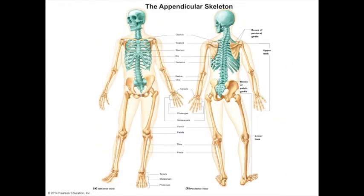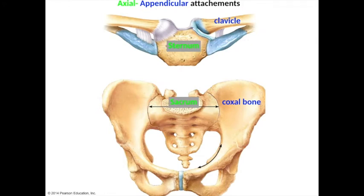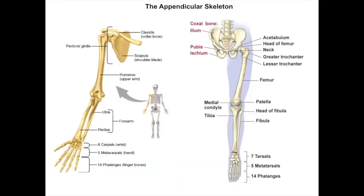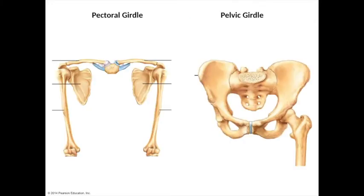Today we're going to go over a brief overview of the appendicular skeleton, which consists of your upper and lower limbs that are appended to your axial skeleton. The sternum anchors your upper appendicular skeleton and your sacrum anchors your lower appendicular skeleton. There are the obvious arms and legs, but also the girdles which they attach to.